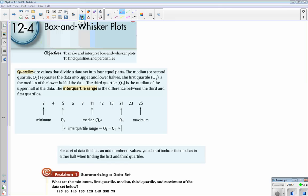Alright, so this is Chapter 12 Section 4: Box and Whisker Plots, one of my favorites. The learning objective is to make and interpret box and whisker plots and to find quartiles and percentiles. Quartiles are values that divide a data set into four equal parts.